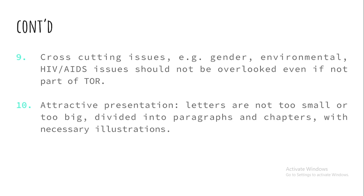Tip number nine: include cross-cutting issues. These are now very worldwide issues. Every project and report is encouraged to address them inclusively — gender issues, environmental issues, HIV/AIDS issues. These should not be overlooked even if they are not part of the terms of reference for the evaluation; always include a discussion of findings about them in your report.